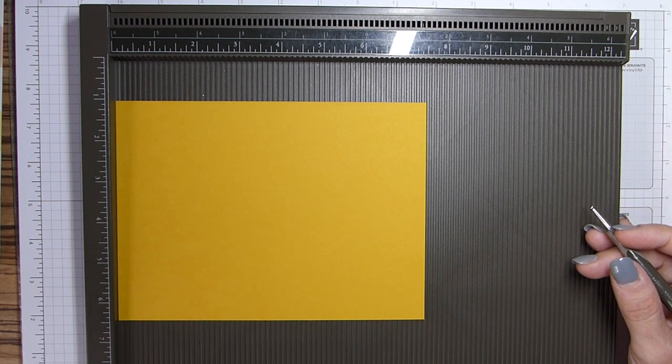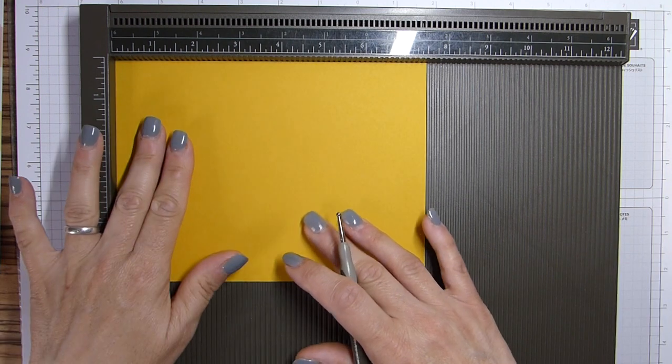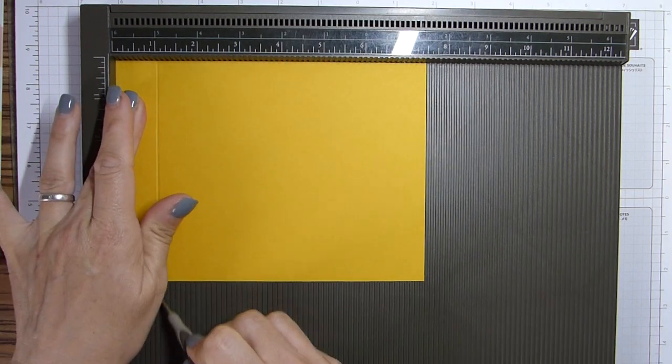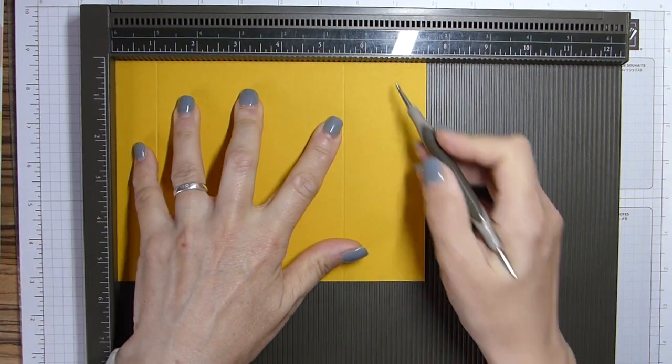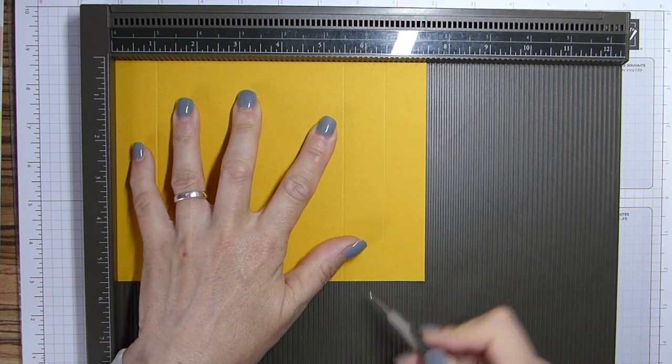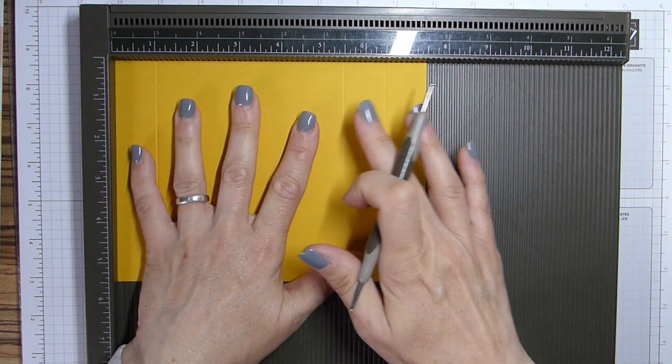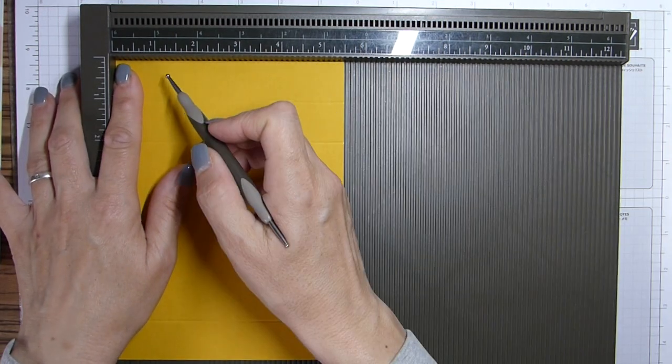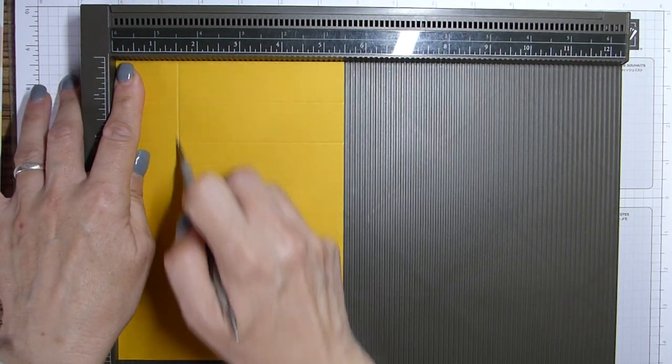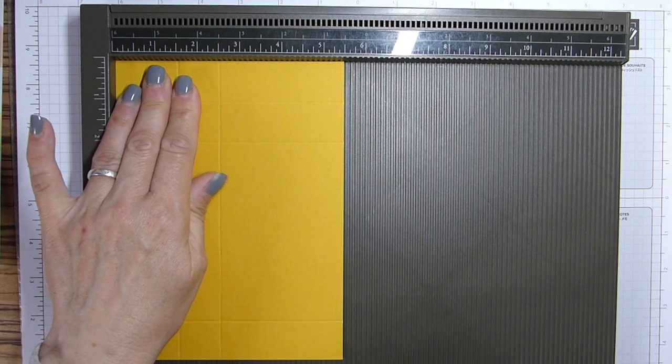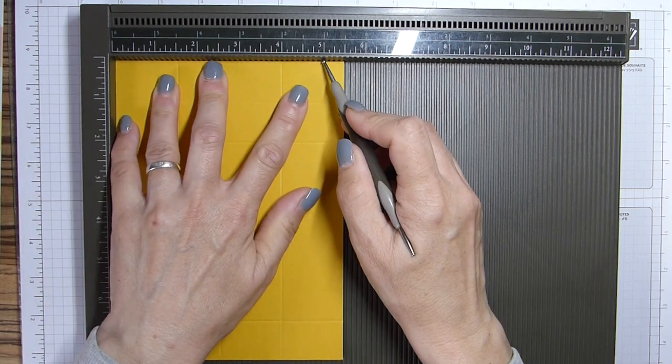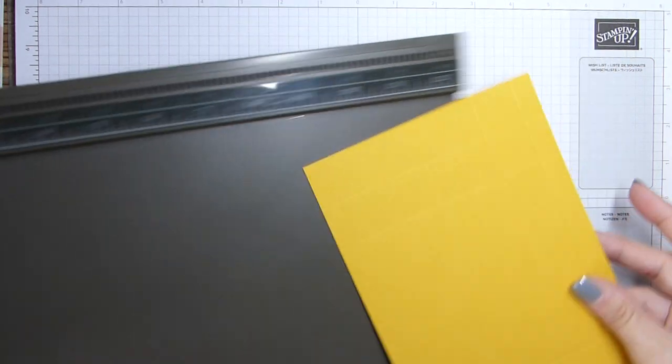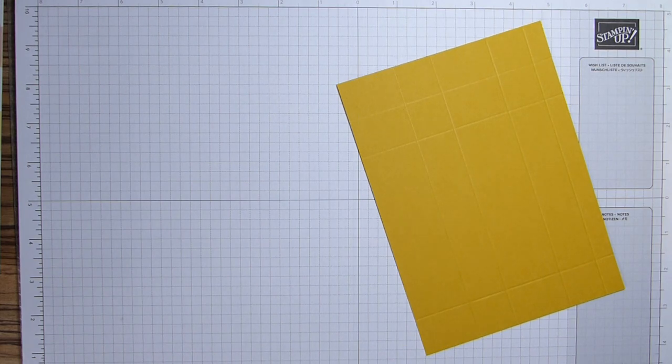And then you are going to score the long side at one inch, five and a half and six and a half. And in centimeters that will be two and a half, 14 and 16 and a half. And then on the short side, we're going to score at one and a half, two and a half, four and five inches. And that will be four, six and a half, 10 and a half and 13 in centimeters.